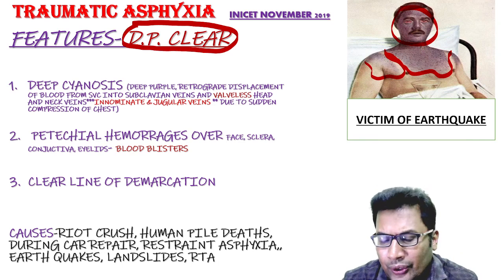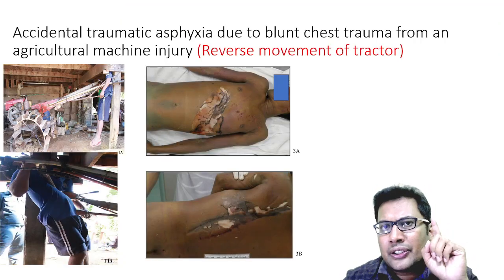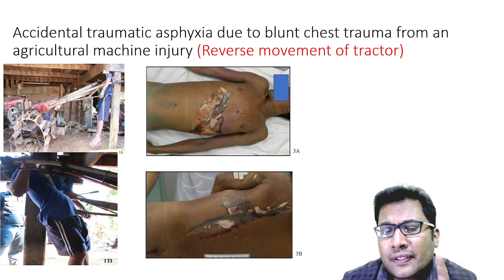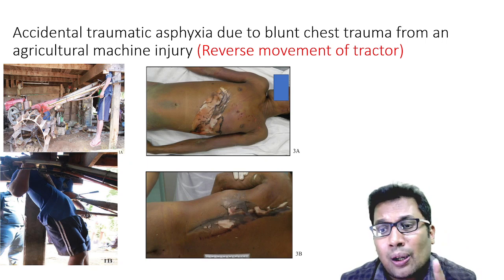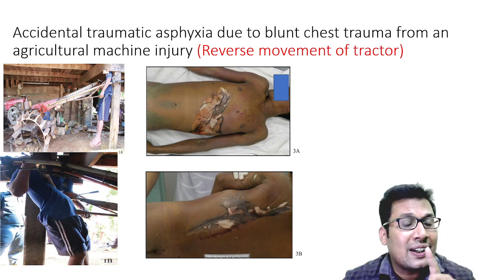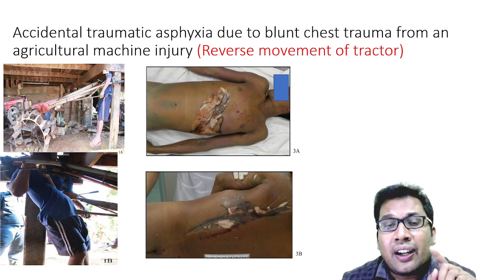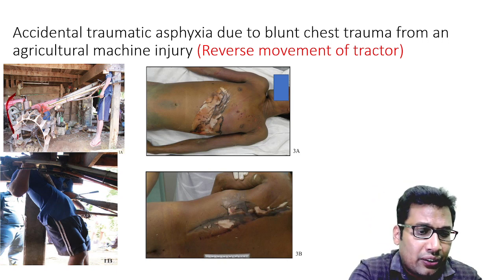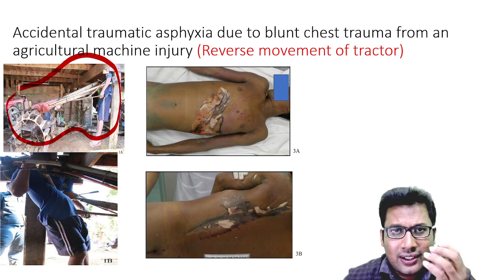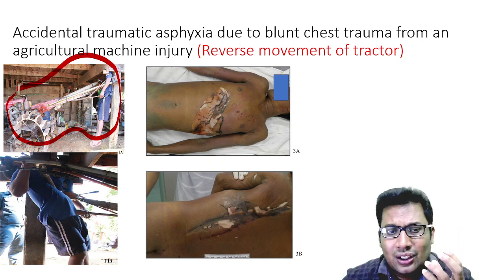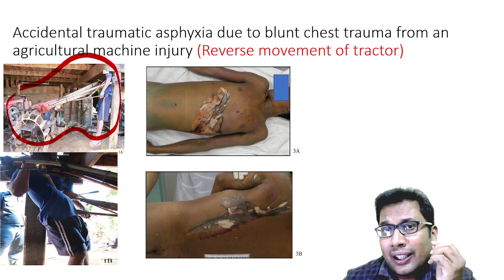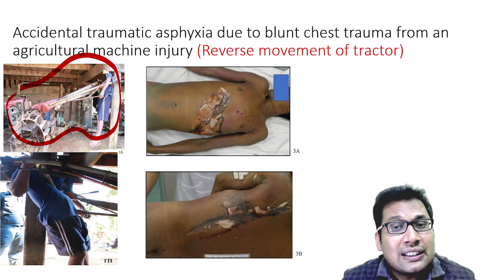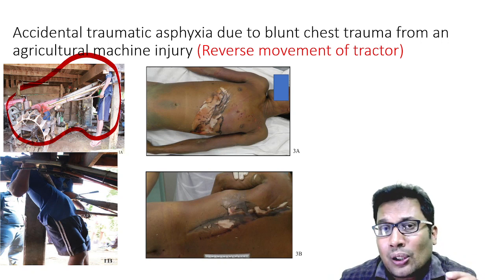In my experience, I have seen one case of traumatic asphyxia — accidental traumatic asphyxia due to blunt chest trauma from an agricultural machine injury caused by the reverse movement of a tractor. You can see the body is almost suspended because of the sudden reverse movement of the tractor. There is traumatic asphyxia, abrasion, congestion, and cyanosis visible.